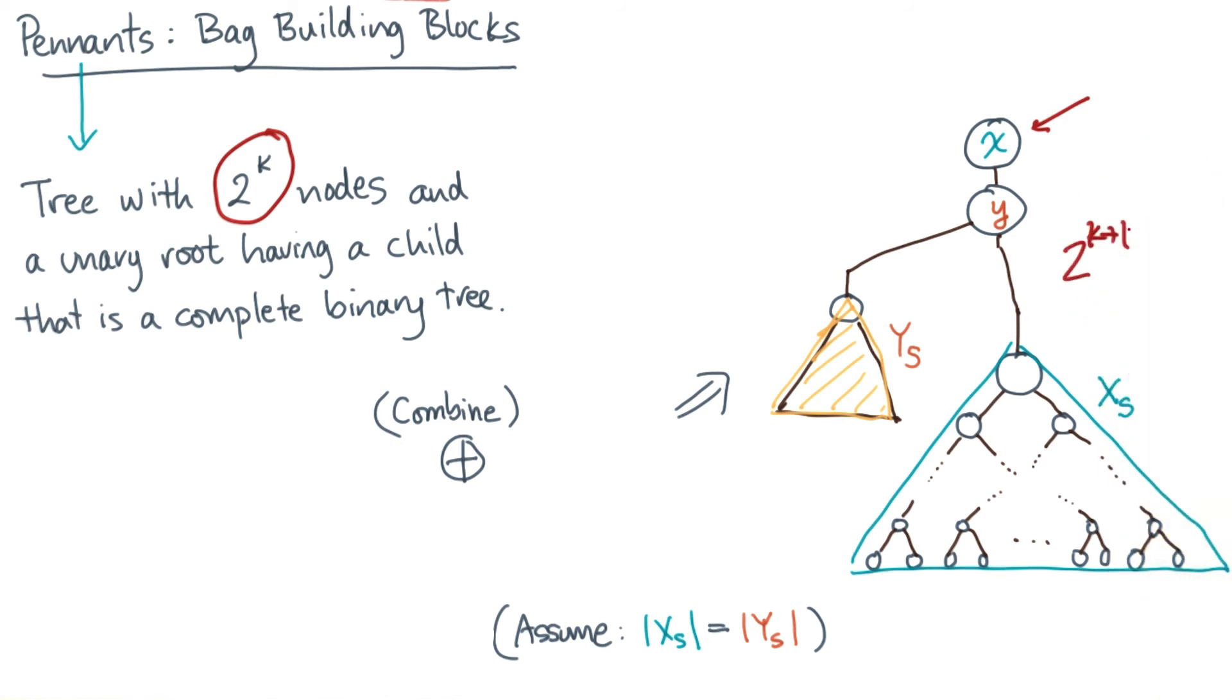So combining two equal size pennants into a new pennant is pretty quick and easy. Similarly, you can split a pennant into two smaller pennants, and it'll be just as easy, essentially by running the same steps in reverse and rearranging pointers accordingly.